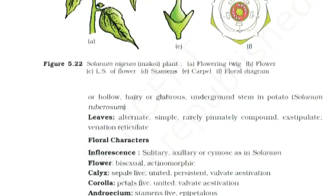Flowers are bisexual, actinomorphic. Calyx: sepals 5, united, persistent, valvate estivation. Corolla: petals 5, united, valvate estivation. Androecium: stamens 5, epipetalous. Gynoecium: bicarpellary, obliquely placed, syncarpous, ovary superior, bilocular, placenta swollen with many ovules, axile placentation. Fruits: berry or capsule.